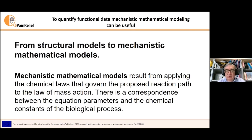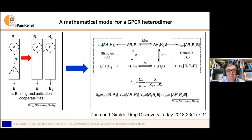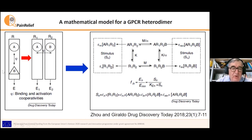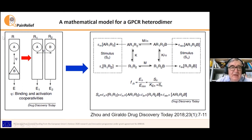We have seen some examples of structural models. Mechanistic mathematical models result from applying the chemical laws that govern the proposed reaction paths. There is a correspondence between the equation parameters and the chemical constants of the biological processes. We have constructed a mathematical model for a heterodimeric receptor by translating a previous model of one receptor with allosteric interaction between two sites of a single receptor to a heterodimer with allosteric interaction between the two receptors. Doing this, we can see the change from vertical allostery in the single receptor to horizontal allostery in the heterodimer.